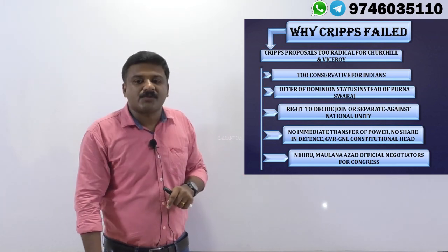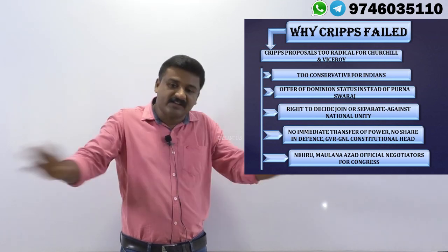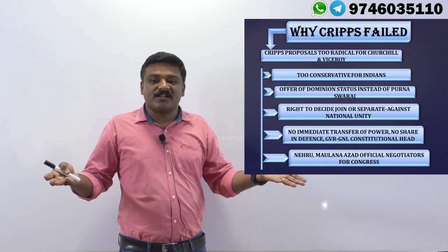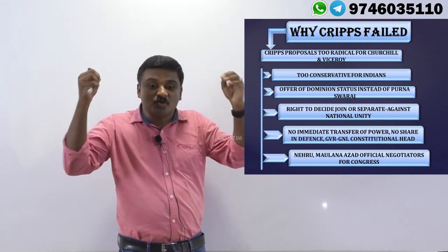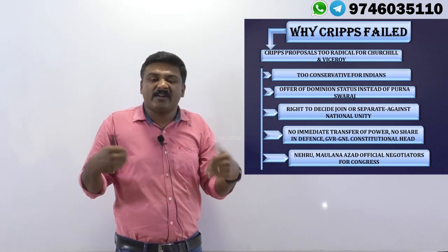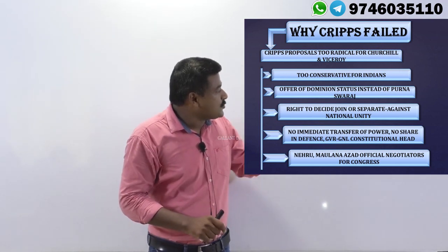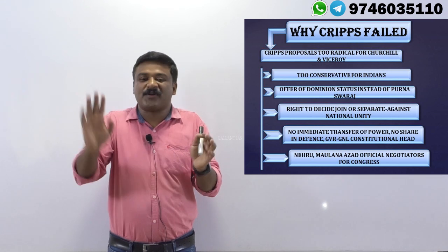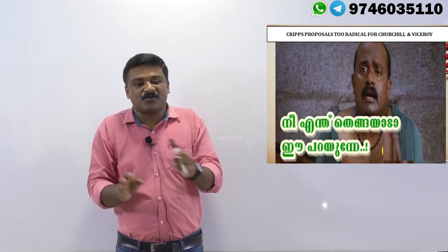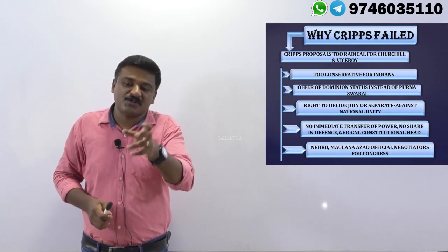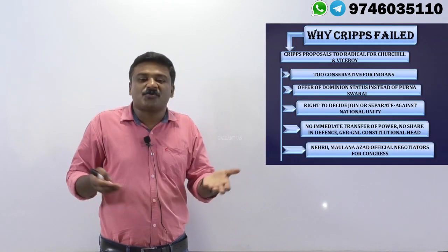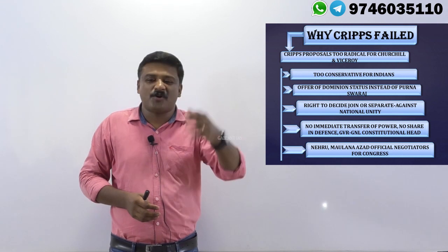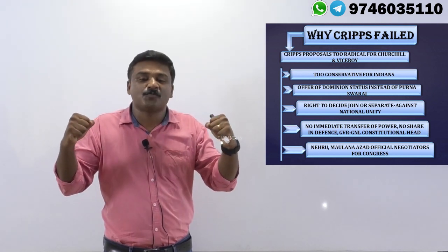Now why did Cripps Mission fail? Everybody rejected it. Even Winston Churchill rejected it — for him the proposals were too radical, offering too much to Indians. For Winston Churchill and the Viceroy, the provisions were too radical. But for Indians, they were too conservative — 'we cannot play football with Dominion status; we want complete independence, Poorna Swaraj.'